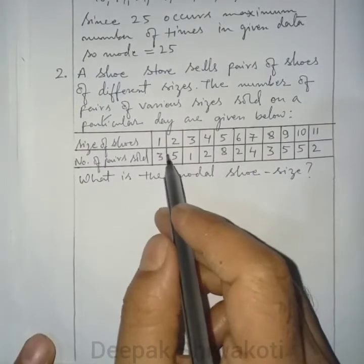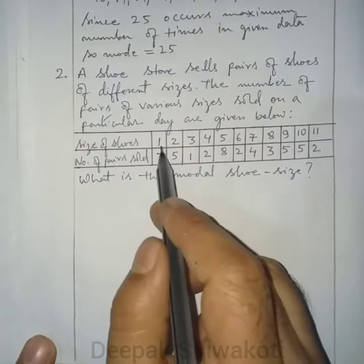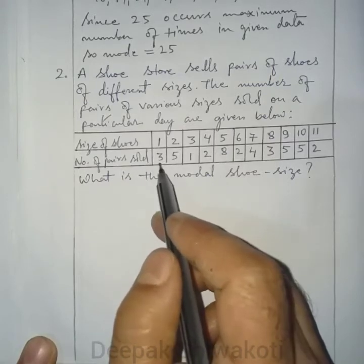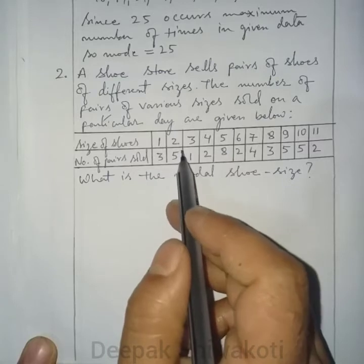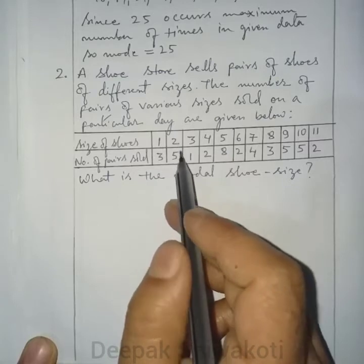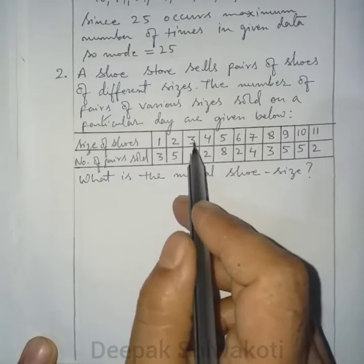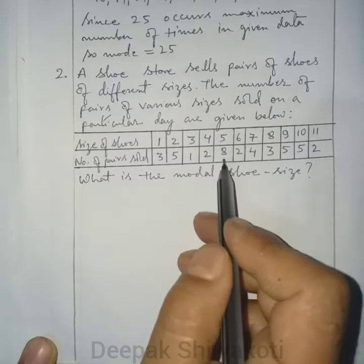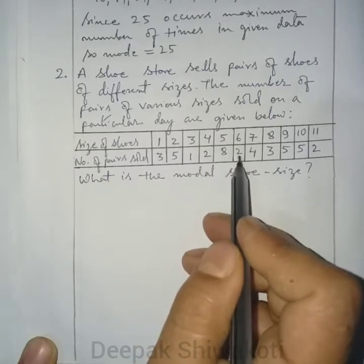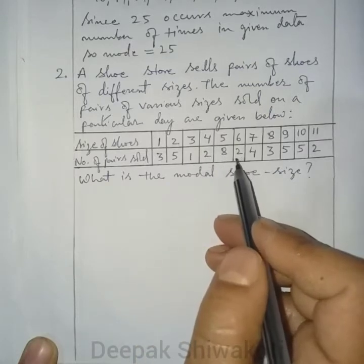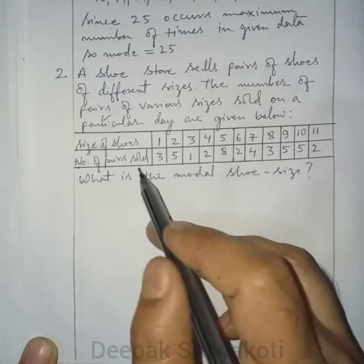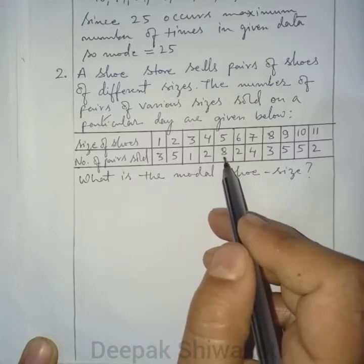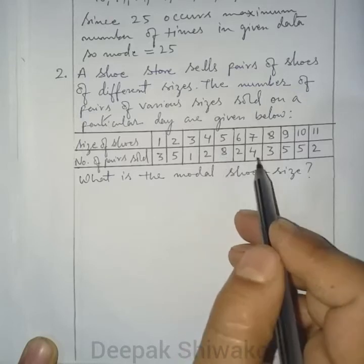From the frequency distribution: size 1 sold 3 pairs, size 2 sold 5 pairs, size 3 sold 1 pair, size 4 sold 2 pairs, size 5 sold 8 pairs, size 6 sold 2 pairs. We can see that 8 number of pairs sold is the maximum.